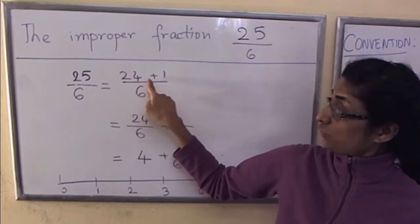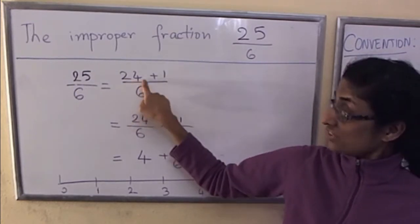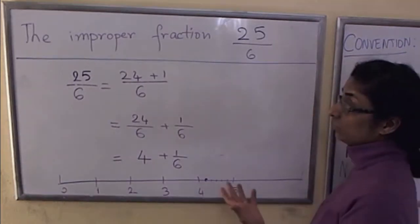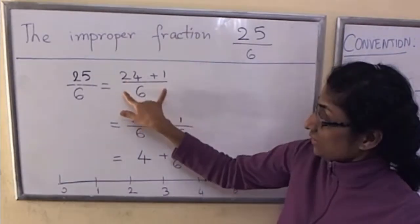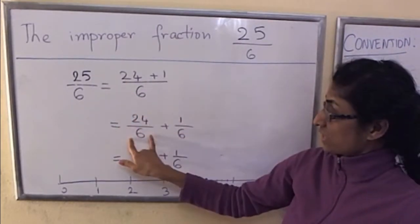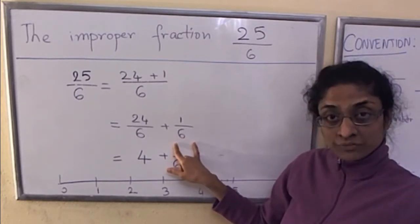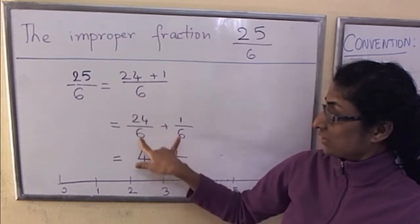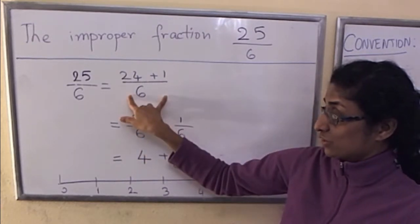So I rewrite 25 as 24 plus 1, where 24 is the highest multiple of 6 in 25. Then I split it up as a sum of two fractions. This may at first feel awkward, but let's see why this fraction is exactly the sum of two fractions.